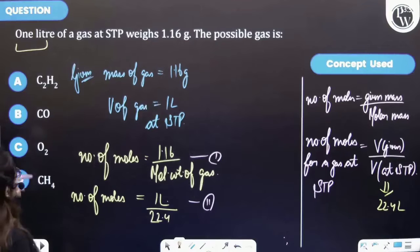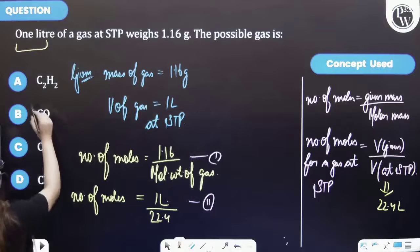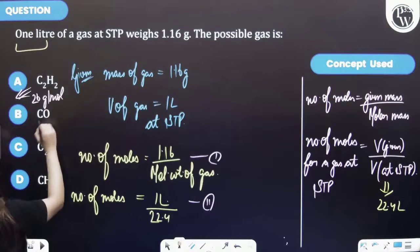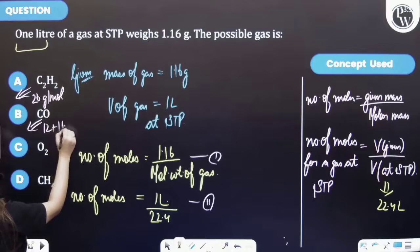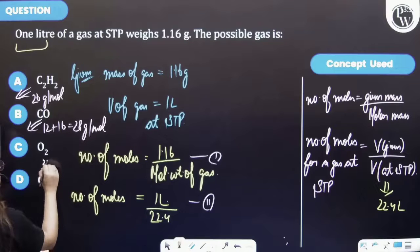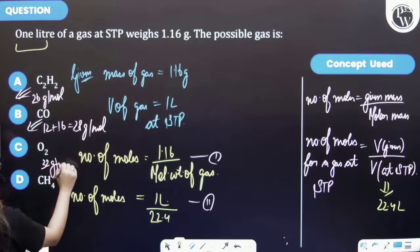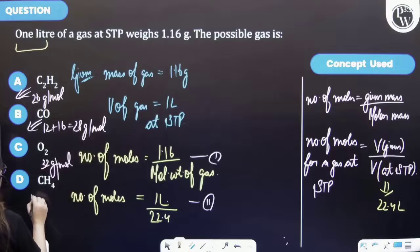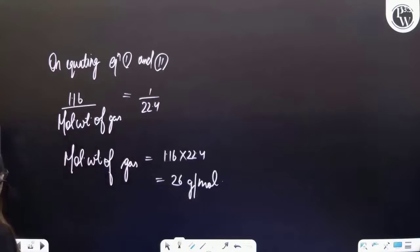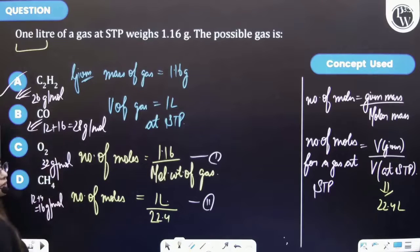Now let's see the options. Options given are C2H2, its molar mass is 26 grams per mole. For CO, that is equal to 12 plus 16 which corresponds to 28 grams per mole. Further, oxygen is 32 grams per mole and CH4 is 16 grams per mole. And we have got 26 grams per mole as the molar mass of the gas, and so option A is the correct answer.